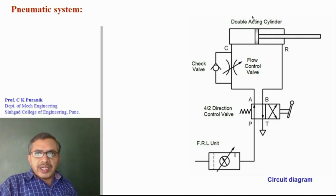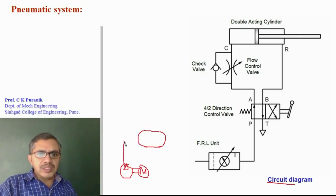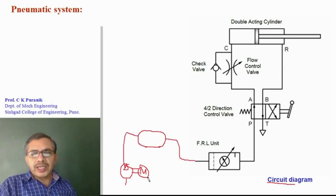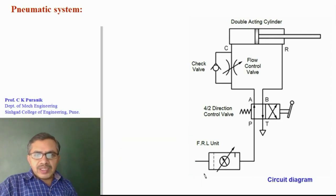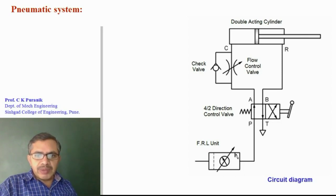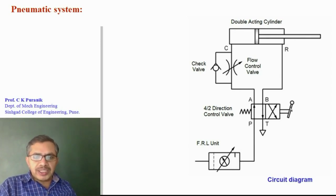This is the circuit diagram of a pneumatic system. While drawing the circuit diagram, the usual practice is not to draw the compressor, its motor, or the air receiver tank. We start directly from the FRL unit. This is the simplified symbol of the FRL unit — the dotted line shows the filter, this is the pressure regulator, and this small line indicates the lubricator. This is the 4x2 direction control valve, this is the flow control valve, this is the check valve, and this is the double-acting cylinder.